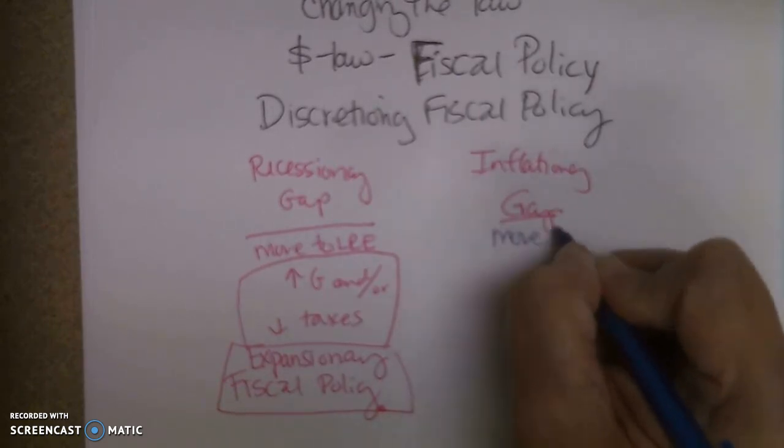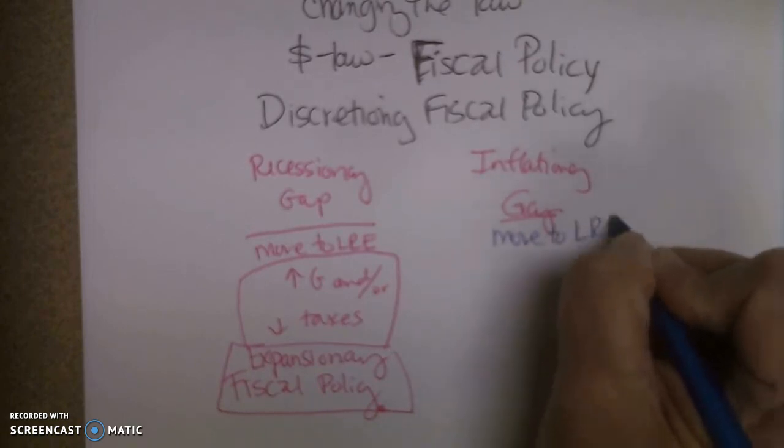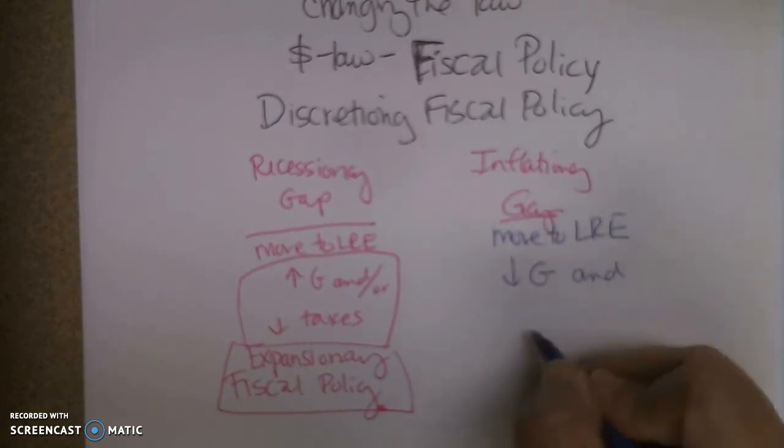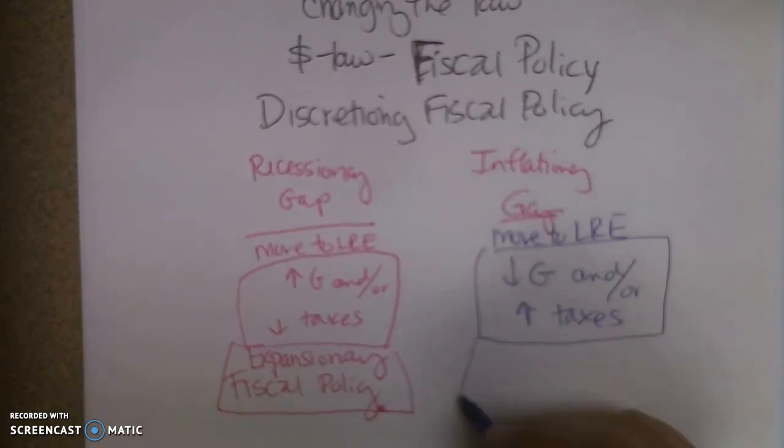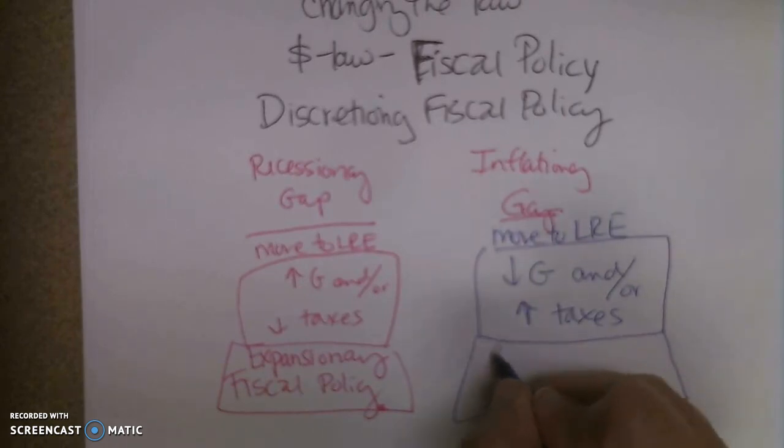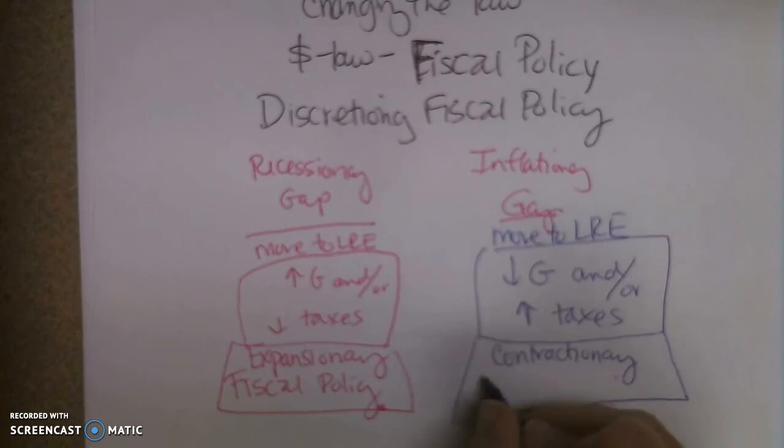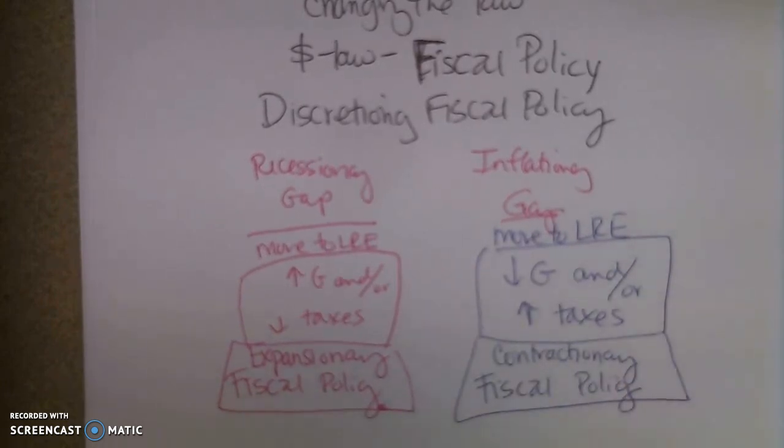Now, in an inflationary gap, our goal is to move to long run equilibrium, but we're going to do it opposite. We're too big. So we need to slow down the economy. So we decrease government spending and or increase taxes. The exact opposite. And what we call this, we're going to get smaller. So we call this contractionary fiscal policy. And that's how Keynes suggested that we either get out of a recessionary gap or an inflationary gap.